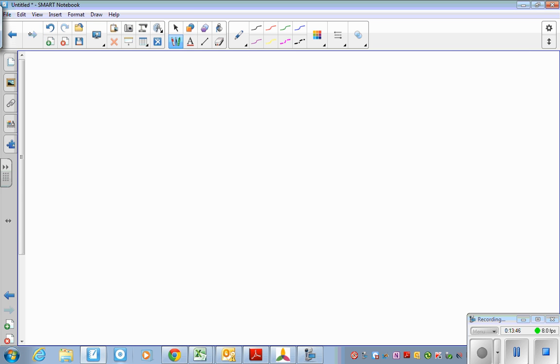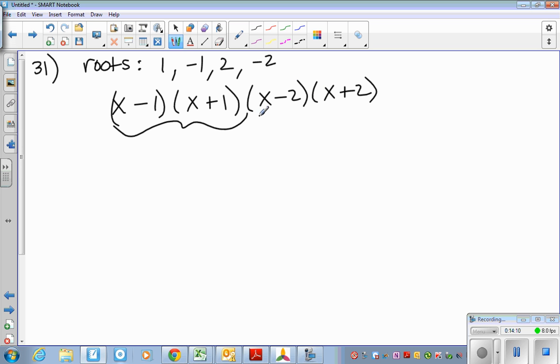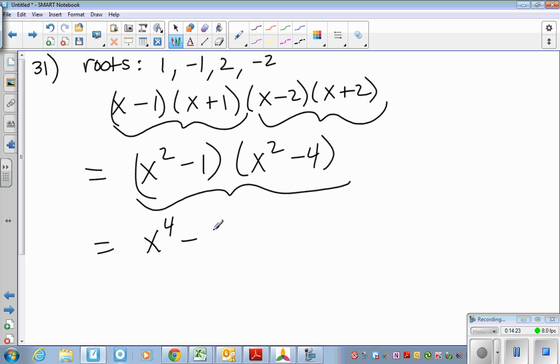For number 31, they give you roots of 1, negative 1, 2, negative 2. So this is review. You write this as x minus 1, times x plus 1, times x minus 2, times x plus 2. Foil these two together. Foil these two together. Then you get x squared minus 1, times x squared minus 4. Then do foil again. And you get x to the fourth minus 5x squared plus 4. So hopefully this one was easy. But I just wanted to remind you guys. Foil the two that go together and keep on working like that.